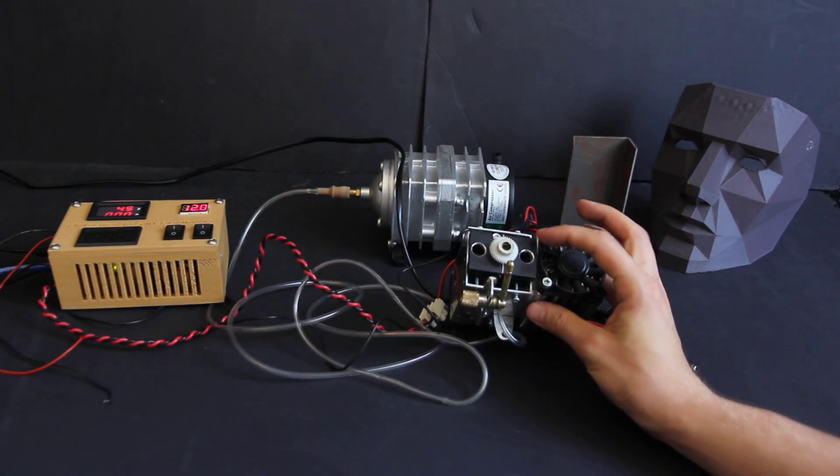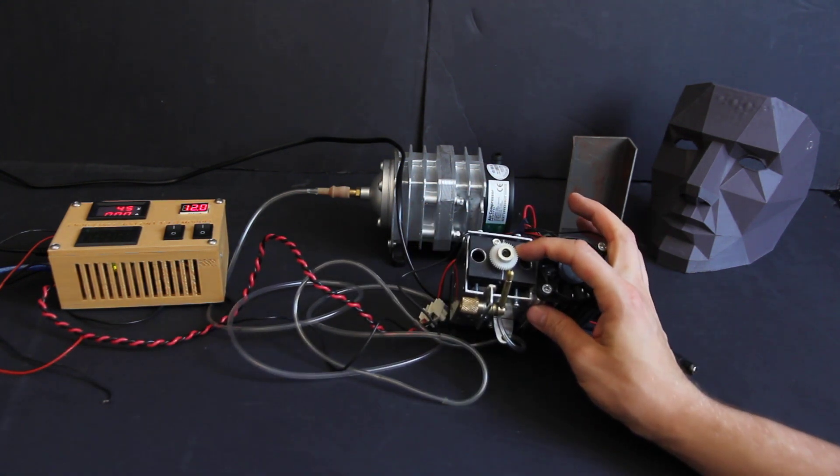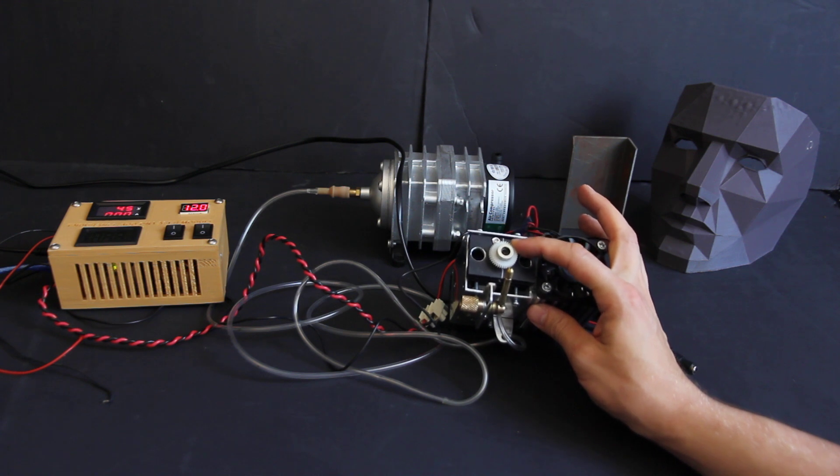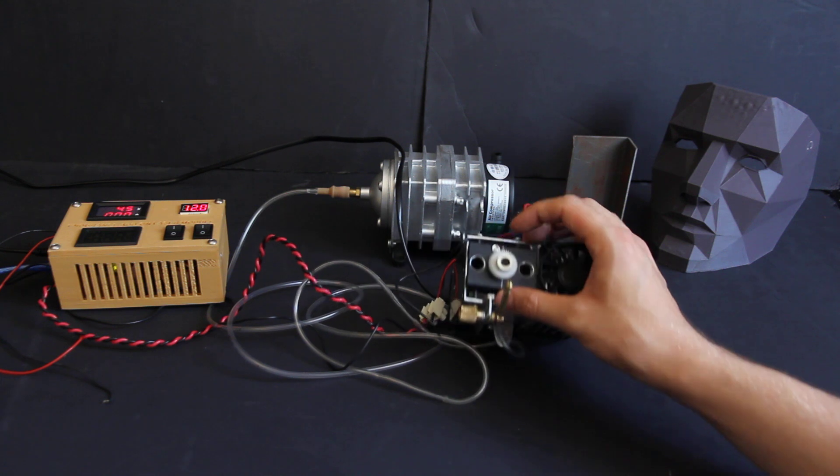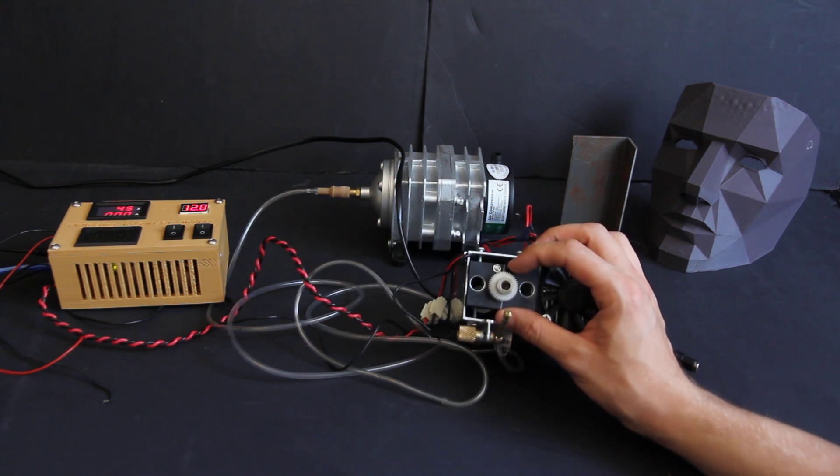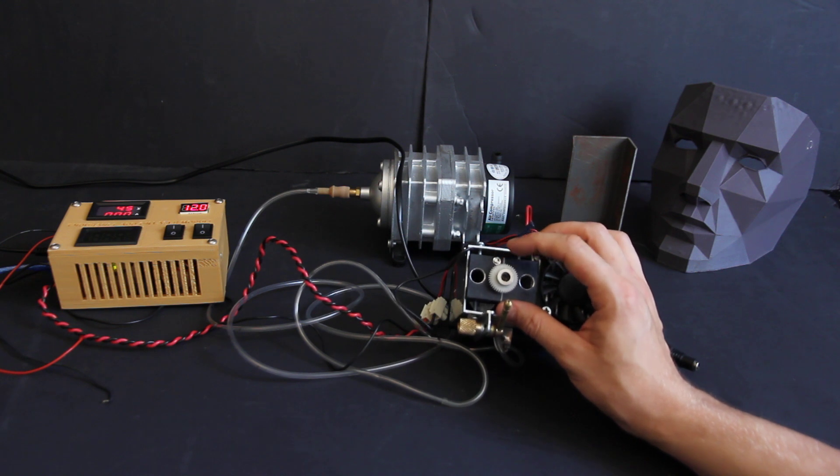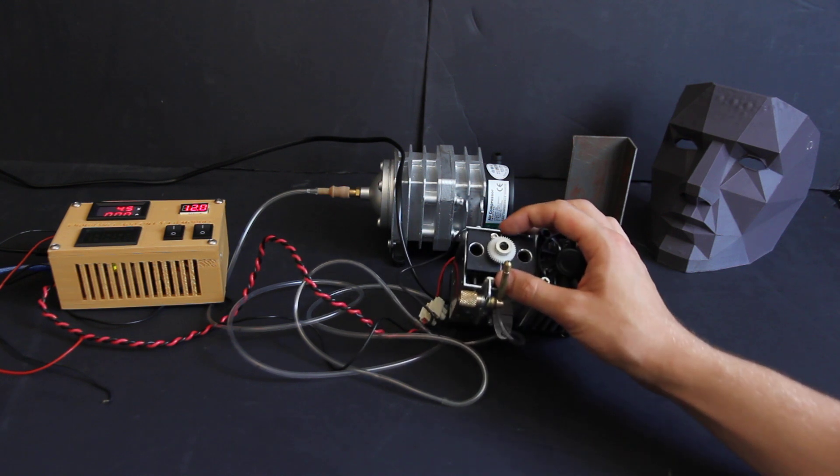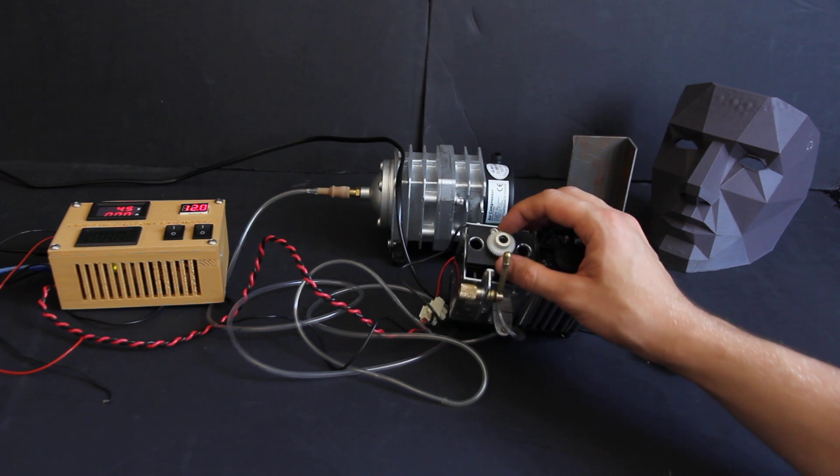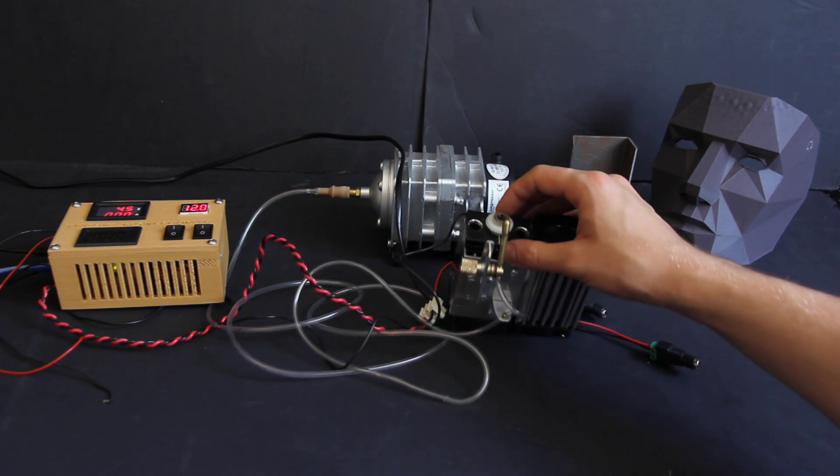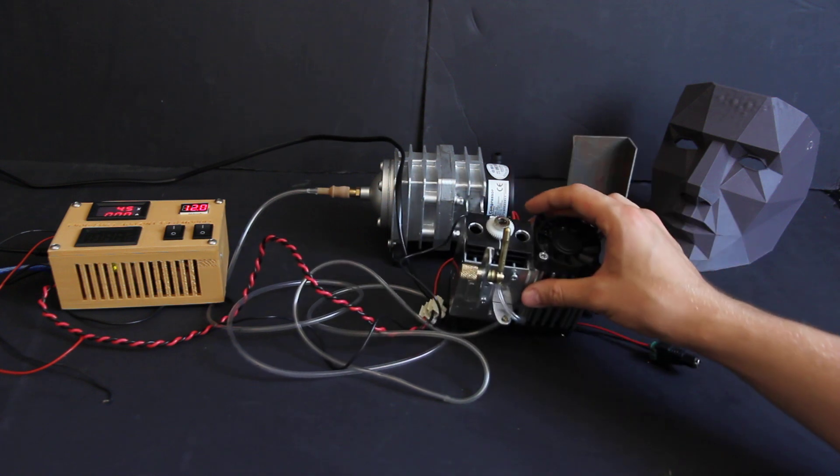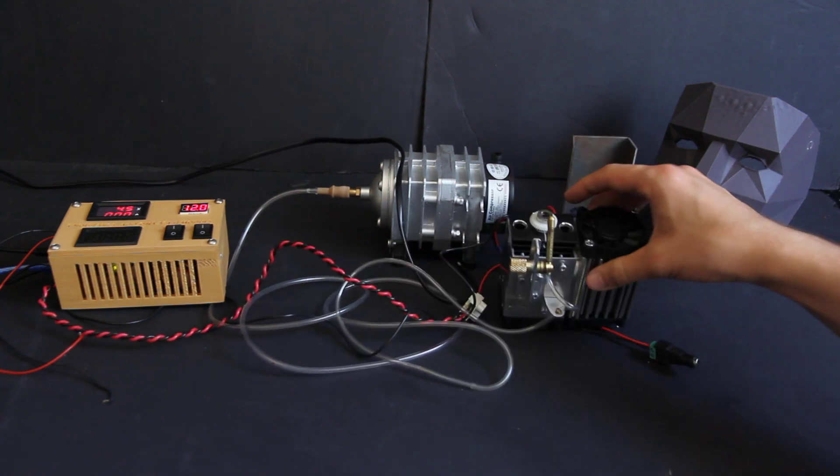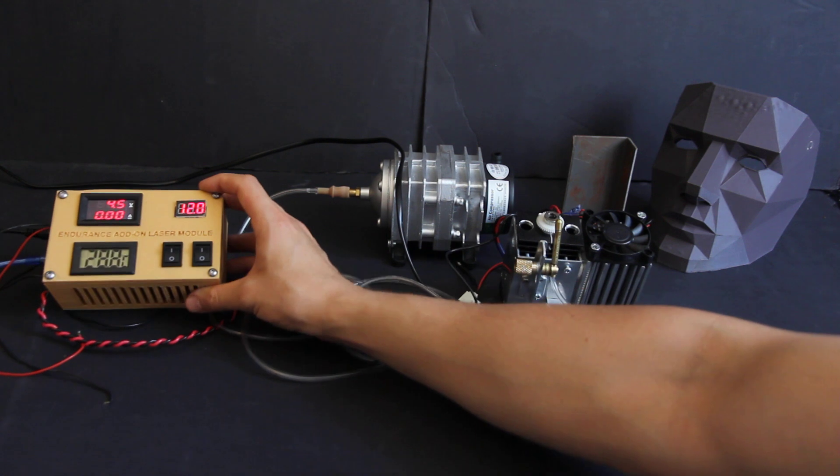The third improvement is we added a bigger focusing ring. Now it's much easier for you to get focus and we'll send it with preset focus when you have already set up the focus. We will tell you, for example, this is like 7.2 centimeters. The best focus for this laser is probably like this.